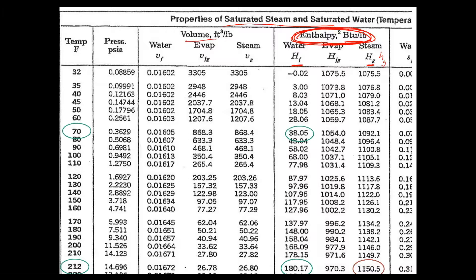H sub FG is the enthalpy of the phase change in going from water to steam, or from steam back to water. When you're putting energy into water and turning it into steam, H sub FG tells you how much energy in BTU per pound you need to put in. And once you're in steam and want to go back to water, H sub FG gives the enthalpy in BTU per pound that is liberated when you transfer the steam back into water.